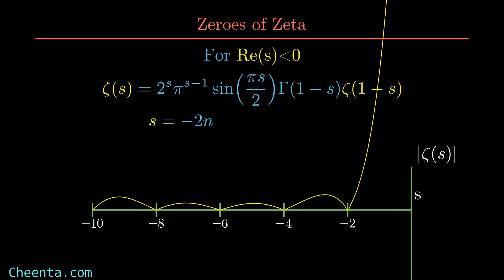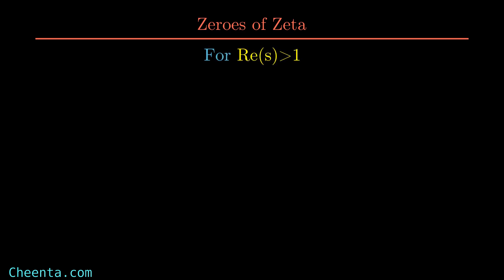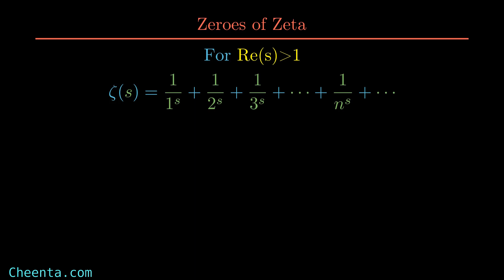As you can see from the plot, I have plotted the modulus of the Zeta function along the y-axis. Now let's discuss the second region: the real part of z greater than 1. In this region, the Zeta function is defined as the infinite sum, and using algebraic manipulation it can be written as an Euler product over primes — a product over all primes p of 1/(1 - p^(-s)). In this region, Zeta of s would be zero only when p to the power s equals zero, but no number raised to any power equals zero, so there are no zeros in this region.